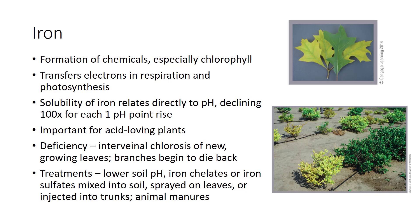Iron chlorosis is the usual symptom of iron hunger. It is easy to see as an interveinal chlorosis on new growing leaves. While leaf veins remain green, tissue between the veins becomes light green or yellow. In trees, branches begin to die back. Fruit and other horticultural crops commonly show these symptoms. Examples include azaleas, pin oaks, and blueberries.